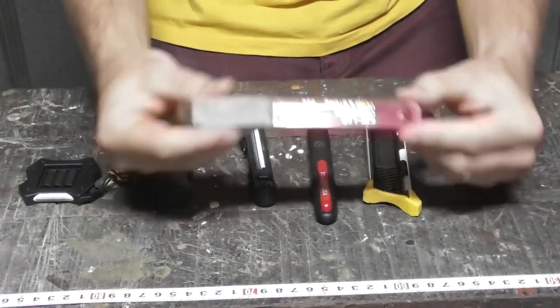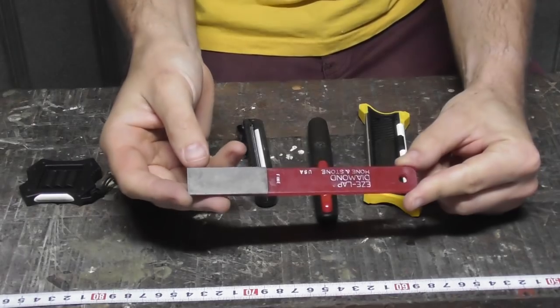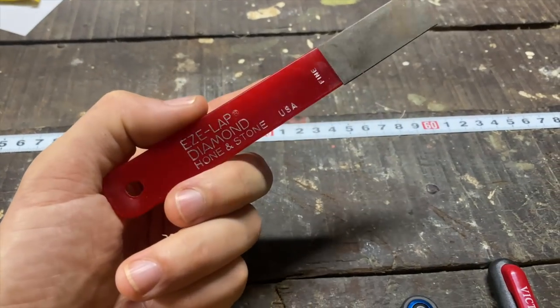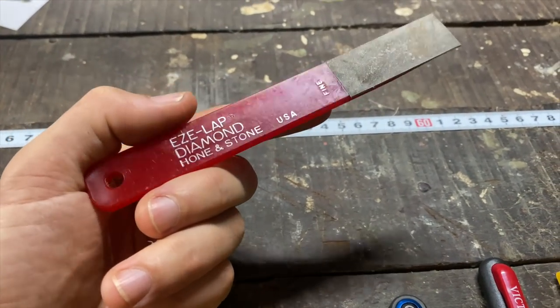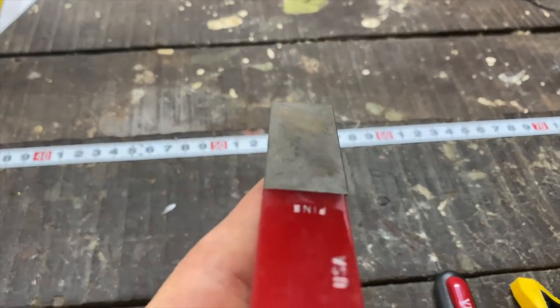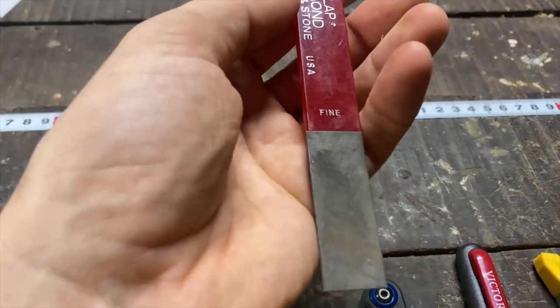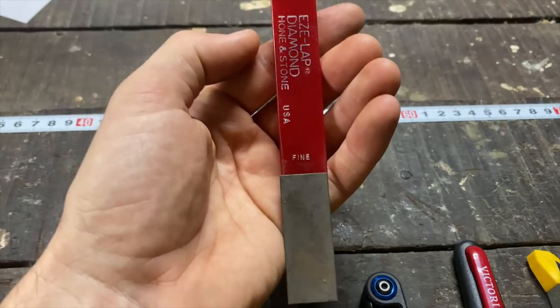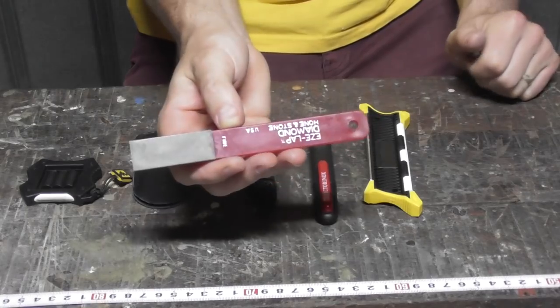Alright, so I've got an EZ-Lap Hone and Stone. Very simple little device here. Plastic handle with a, I believe, 700 grit fine diamond plate on the end. You can buy these in different grits. Very basic tool. Costs about $16 from your hardware store.